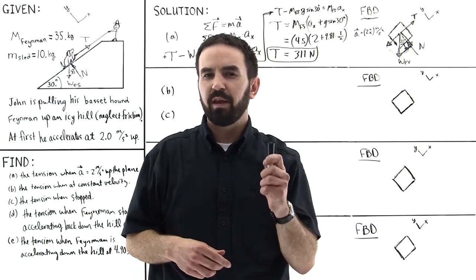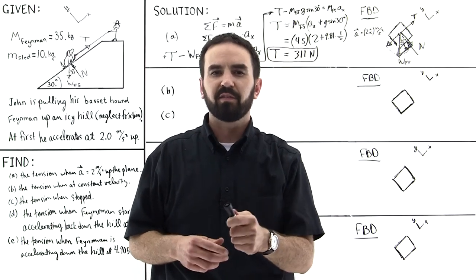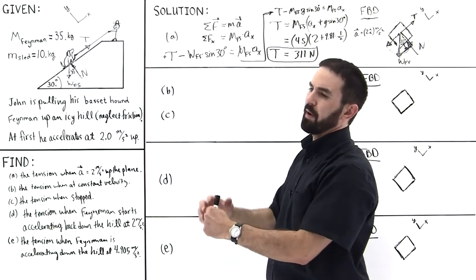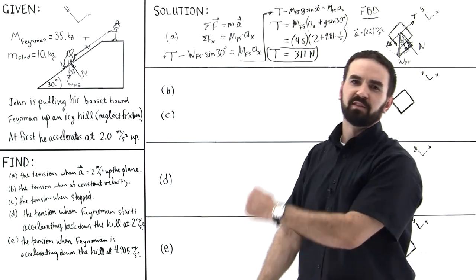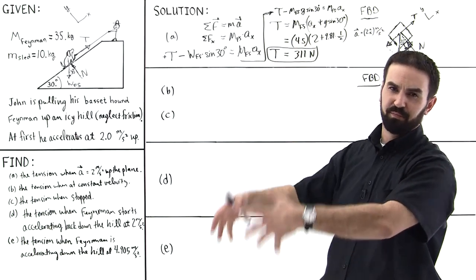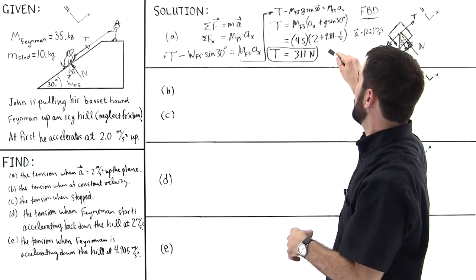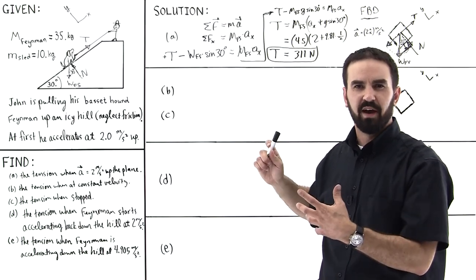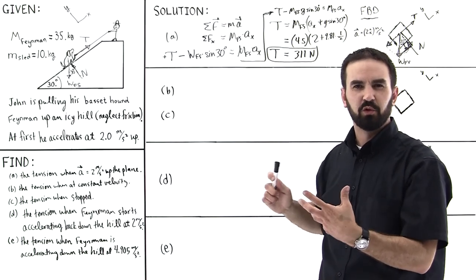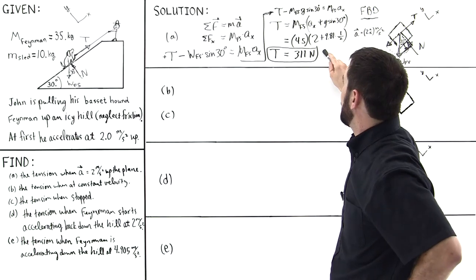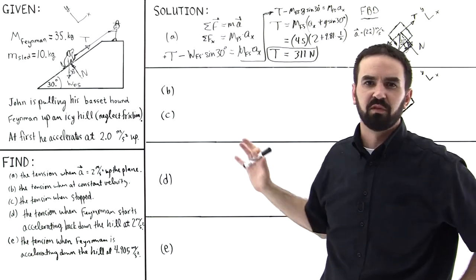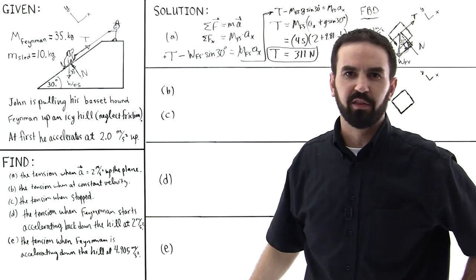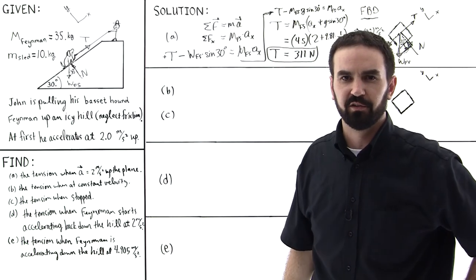This is Part A, and we know that in Part A it will have the greatest tension because John is accelerating Feynman upward, exerting a lot of force. So we make an intuitive prediction that this tension — 311 Newtons — will be greater than all the other scenarios.